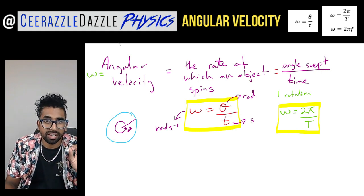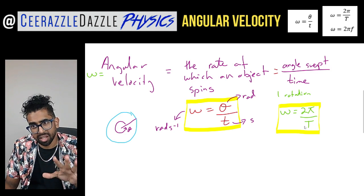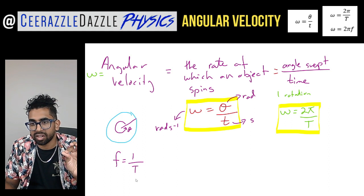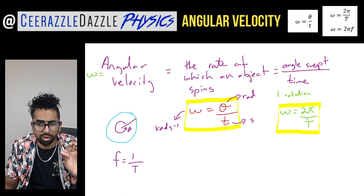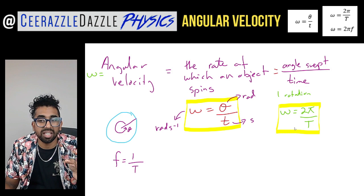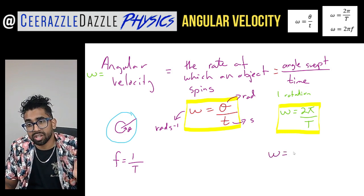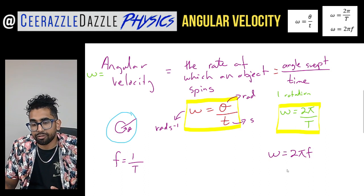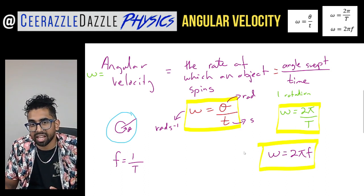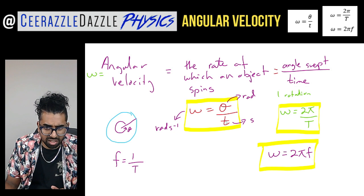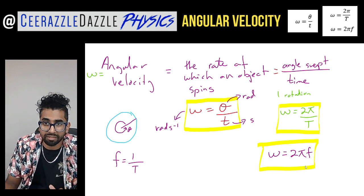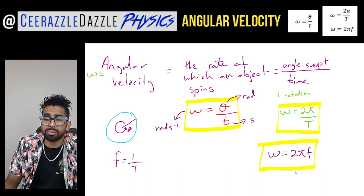There's one more formula we can get. We know that frequency f equals 1 divided by the time period T. Plugging that in — since 2π divided by T is 2π times (1/T) — we get omega equals 2πf. So we now have three formulas: omega equals θ/t, omega equals 2π/T, and omega equals 2πf.